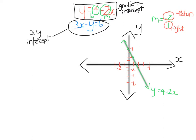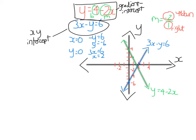Let's look at 3x minus y equals 6 now. We're going to use the xy-intercept method since it's not in the form y equals. So I let x equals 0 to find the y-intercept: 3 times 0 is 0, leaving minus y equals 6, so y is minus 6. I plot that. Then I let y equals 0 to find the x-intercept: 3x equals 6, so x equals 2. Now I have two points and just join them up. It's very important we know how to graph these lines because that's the first step when graphing inequalities.